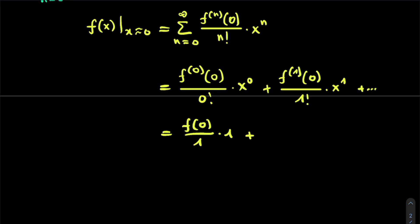Then we add to this the first derivative, so we get df(x) over dx, and we fill this in at x is equal to 0. Then we multiply this with x to the power of 1, which is simply x. And we do this at infinitum.